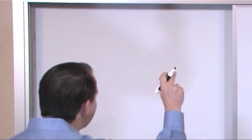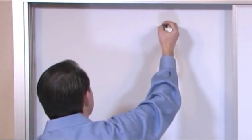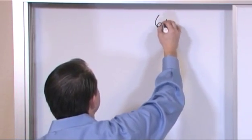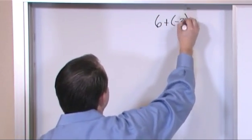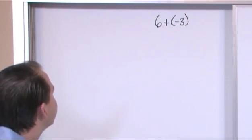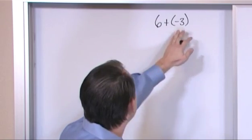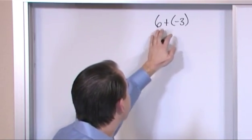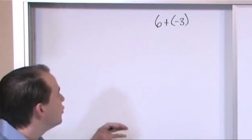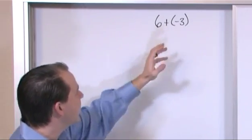Remember in the last section when we were adding integers, if I gave you something like six plus negative three, you know how to do that right? Because basically I taught you that anytime you're adding something together, if one of them is positive and one of them is negative, you always have to do a subtraction because one of these guys is negative.